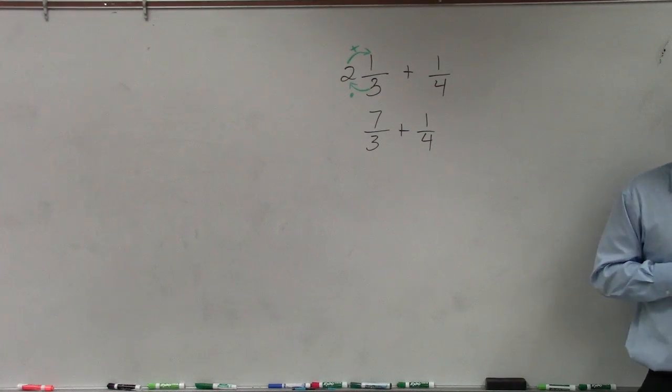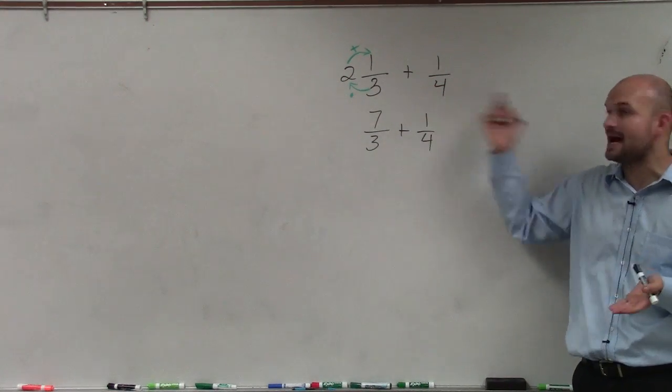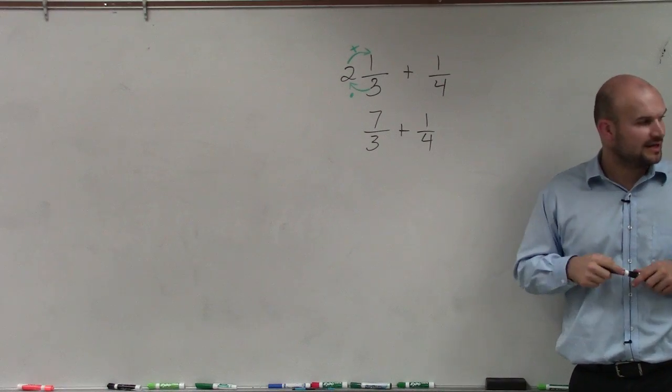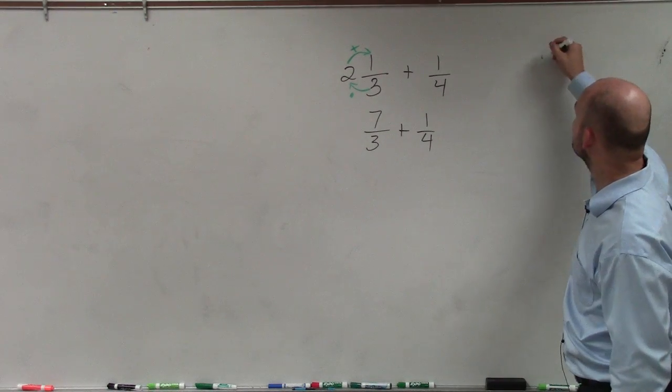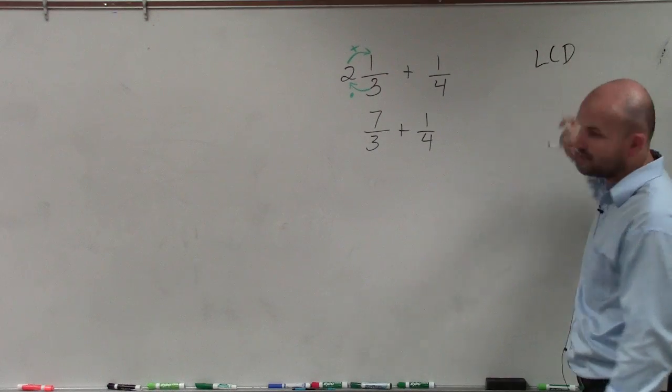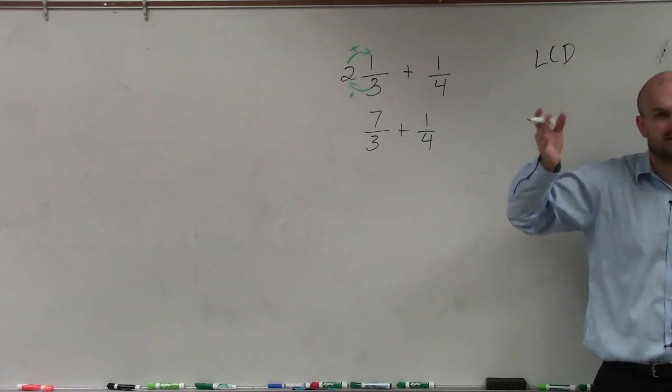But now, they do not have common denominators. So I can't just add 7 and 1. I have to get common denominators. So to do that, we need to determine what is the least common denominator. Now, the foolproof method to do this, if you can't do it in your head, is just list the multiples of each denominator.